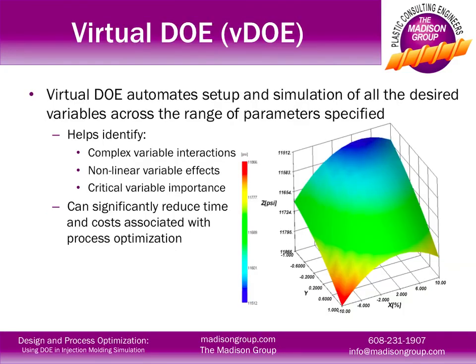Virtual DOE automates and simulates the molding process across a range of desired process parameters. It can help identify complex variable interactions, non-linear trends, and critical variable importance. Additionally, it can significantly reduce the time and costs associated with process optimization.